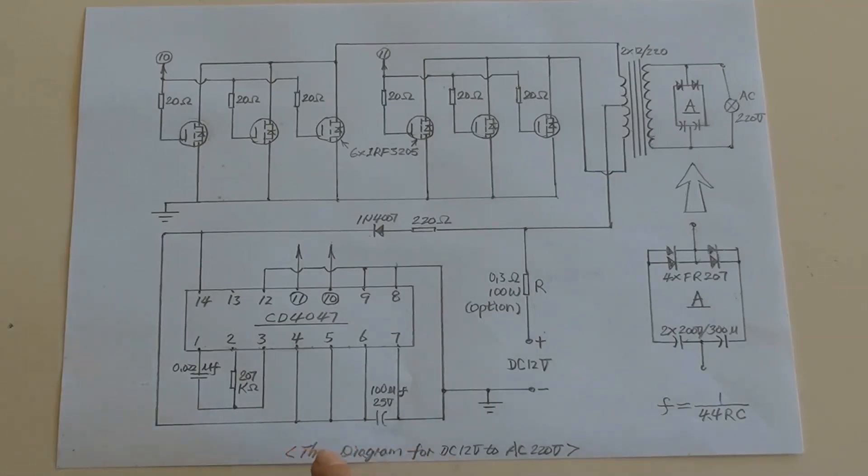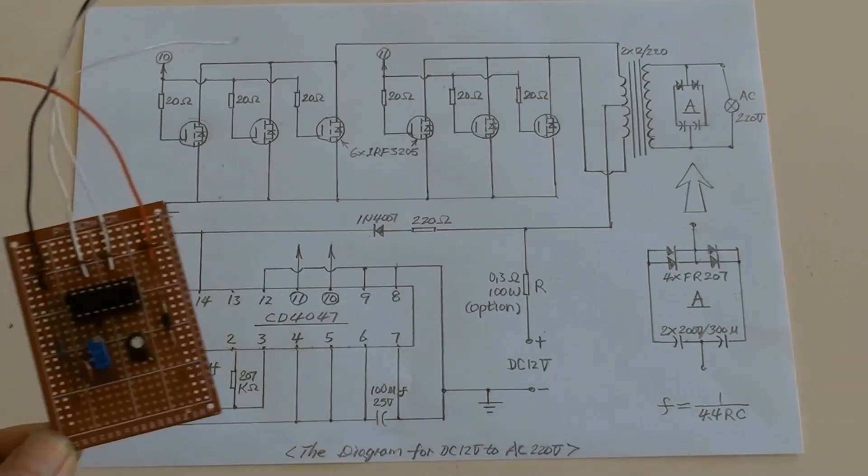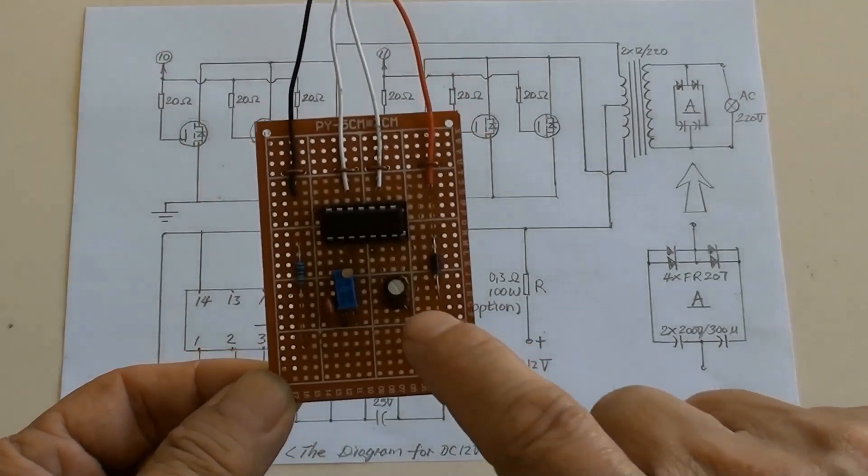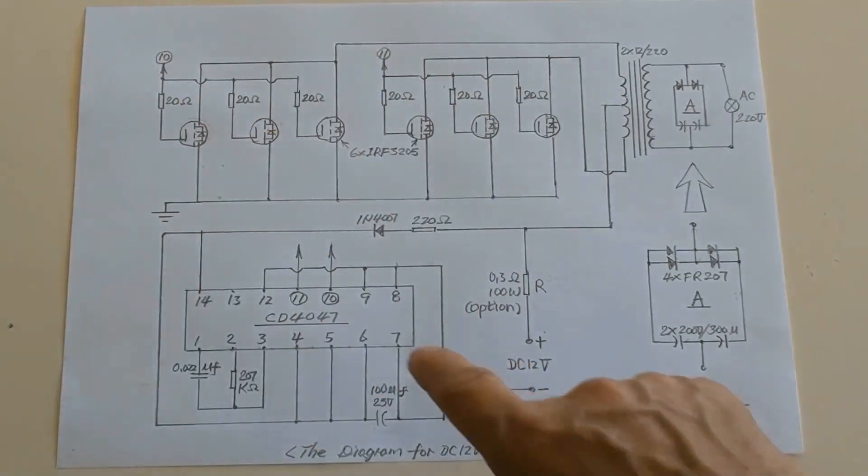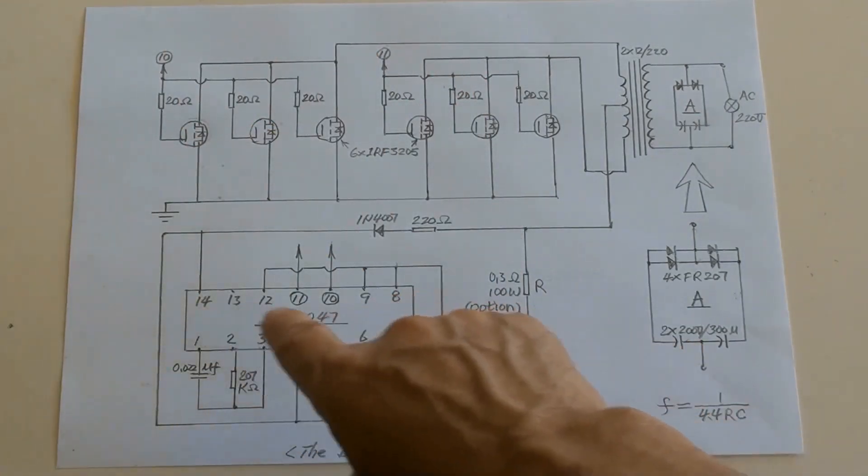This is the diagram for DC 12V to AC 220V DIY inverter. The PCB with a few parts soldered on belongs to the part of circuit here.